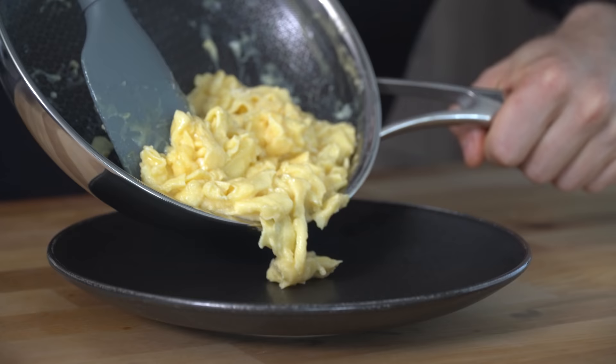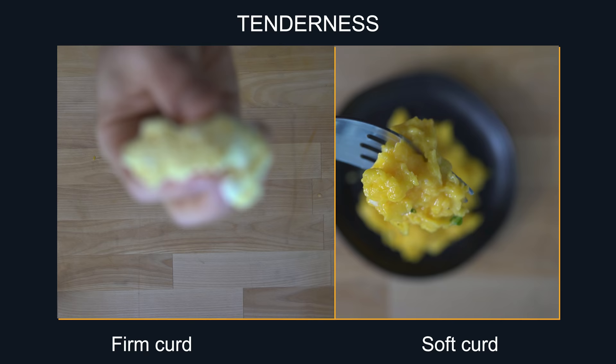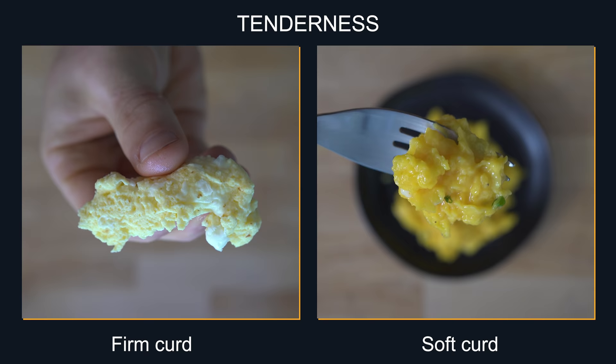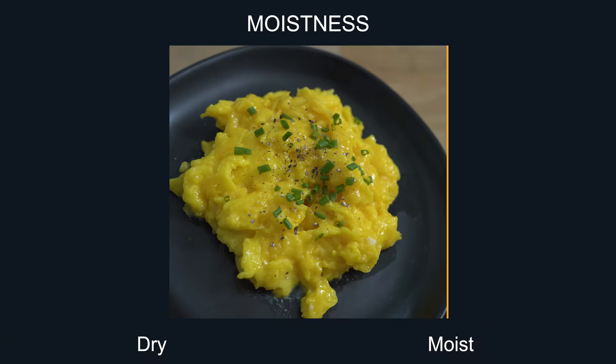Tenderness refers to how tightly the egg proteins have bonded to each other. For example, an egg cooked without salt on really high heat for a long time is going to have a tighter protein bond than one that was cooked at low heat, low and slow, with some butter added. Moistness refers to the water content — higher heat likely means more water has evaporated and you're going to have drier eggs compared to the low and slow version.